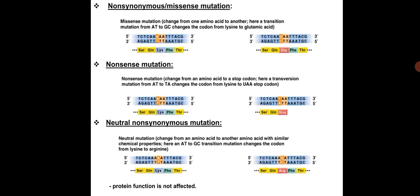In nonsense mutation, there is a change from an amino acid codon to a stop codon. A transversion mutation from AT to TA results in a change in the codon from lysine to stop codon UAA, which stops further extension of the polypeptide chain.